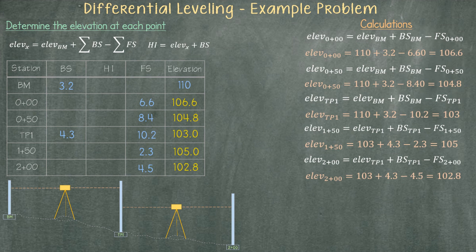We know the elevation at the benchmark and the back sight at this same location. With these two pieces of information we can determine the height of instrument between the benchmark and the turning point one. Therefore, the height of the instrument is 110 plus 3.2, which gives us 113.2.